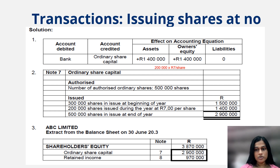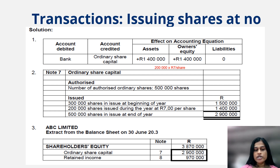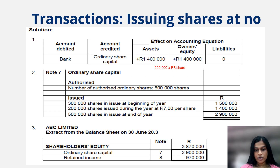Because bank is increasing as it's been debited, assets increase. As the account being credited is ordinary share capital — an owner's equity account that increases on the credit side — owner's equity also increases. Liabilities are unaffected and therefore zero. The effect on the accounting equation is that assets and owner's equity both increase by 1.4 million, and the equation balances.